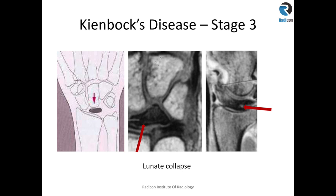In stage 3, you get lunate collapse — the lunate loses its shape — and you get low T1 signal and low to intermediate patchy STIR or fat-sat signal intensity within the lunate. That is the more advanced stage of Kienböck's disease.